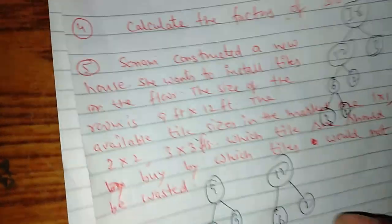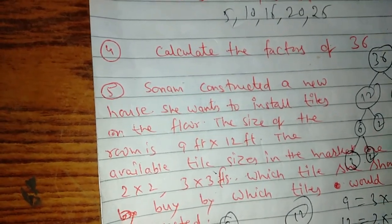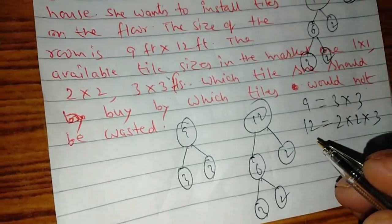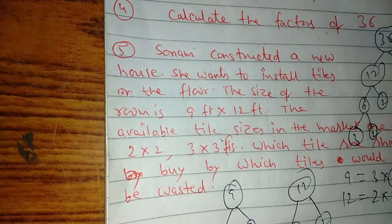Now what happened? 9 and 3 is 3 by 3. 12 and 2, 2, 3. Now what will we do in this? Common. What is common? 3.